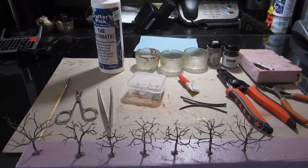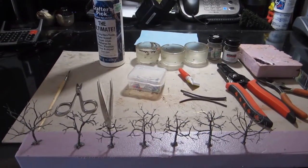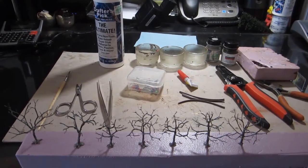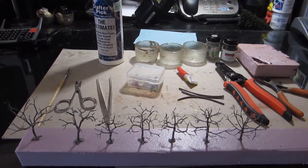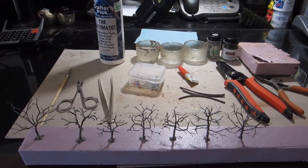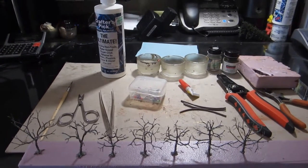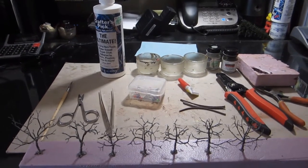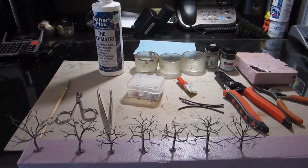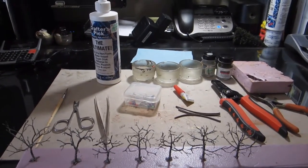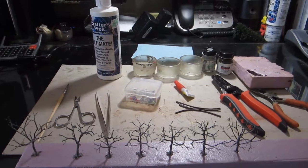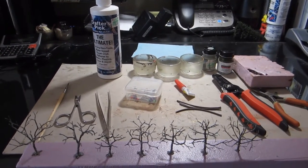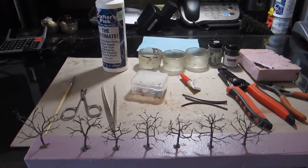Today I'm going to show you how to make some very nice trees using the materials you see here. The most important part is the crafter's pick glue. This is called the ultimate. It's a water-based glue that dries completely clear. It's quite thick and has many uses besides the one I'm going to show you today. I also have some CA glue, super glue, and various tools for holding things and paints, and I will go over each individually as we use them.